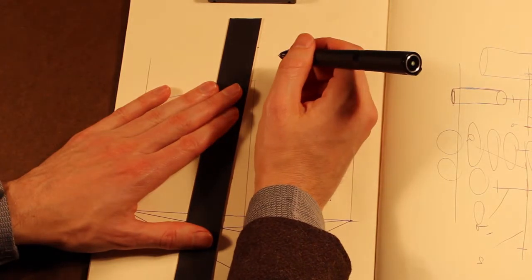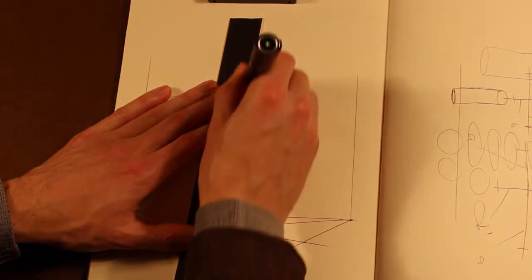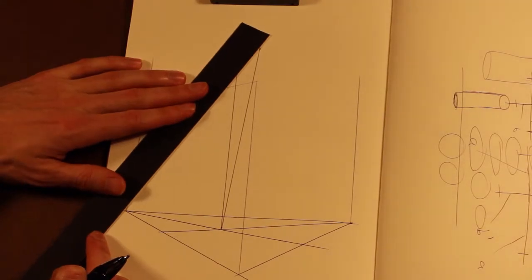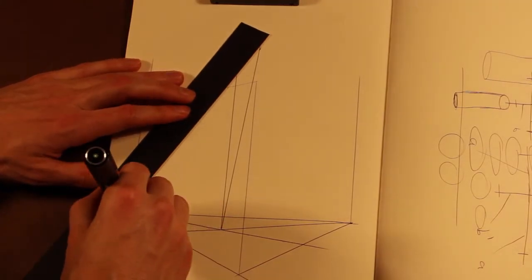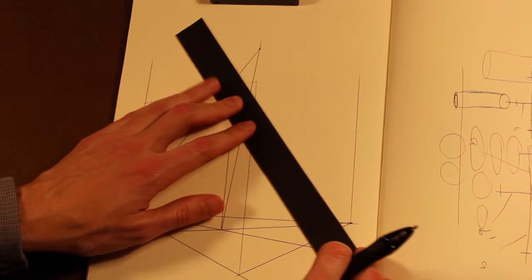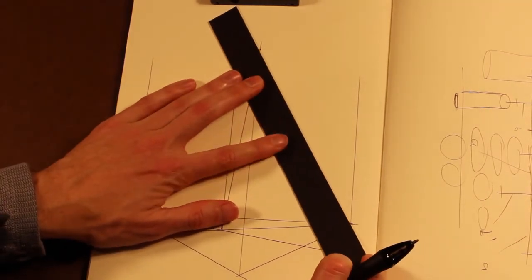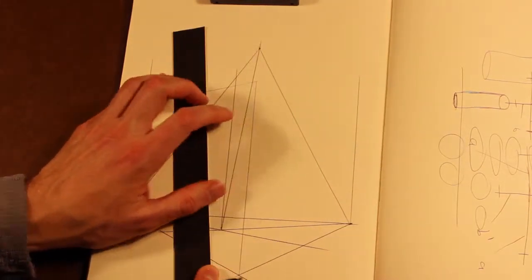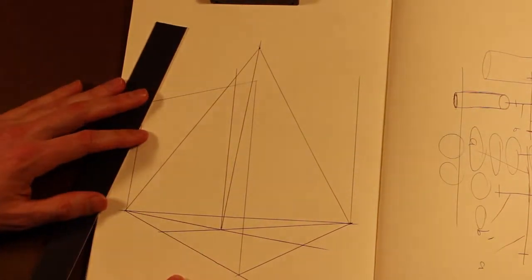So then we're going to make all of our lines projecting upward go to this vanishing point. And that will create a fairly interesting effect. This is kind of like an extreme version of it. Generally, you'd want the vanishing point off the page, but we're doing this so that you can see it.